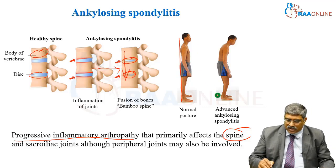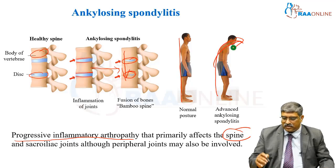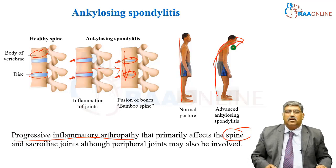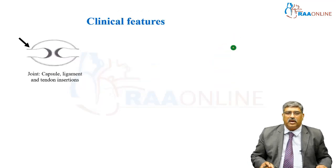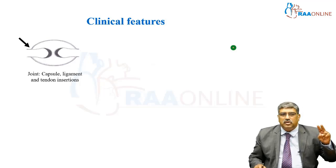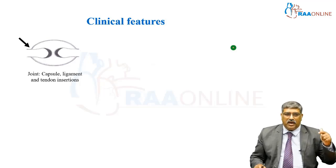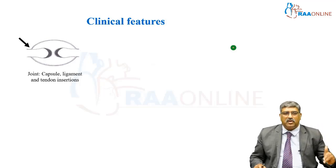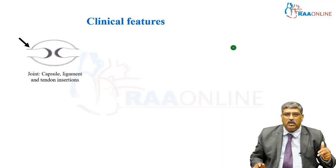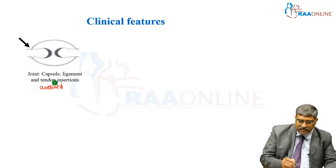The normal patient will become bent like this — that is ankylosing spondylitis. The joints may be involved where the capsule, ligament, and tendon insertion can be affected, and there is going to be severe arthritis.